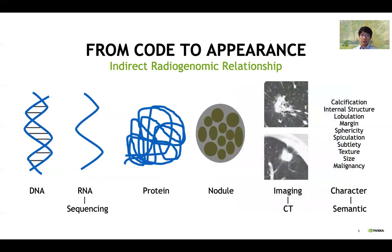Unlike language-image pairs used as an example, where the language is a kind of direct description of the image, gene code-to-image feature relations can be far more indirect and noisy. As we're showing here, the gap and steps between DNA and image semantic features that can be understood by us is far greater than from image to its caption, making it a lot more difficult to find the relations in the field of radiogenomics.